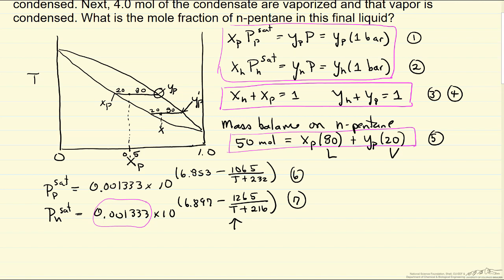So I have seven equations, and let me just indicate. So seven equations, which means I must have seven unknowns that I'm solving for. And indeed, that's the case. We don't know the temperature that appears in the Antoine equations.